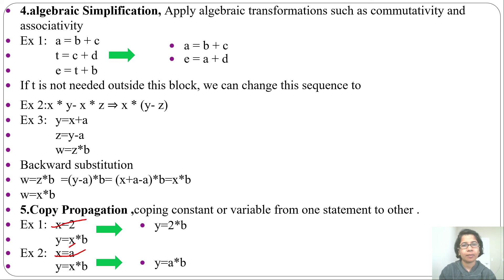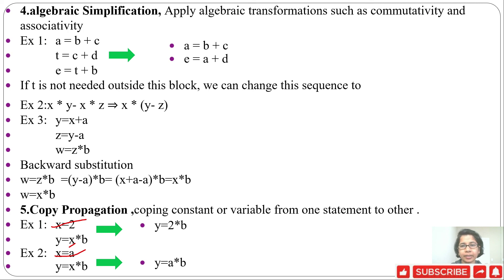This is all about algebraic optimization. We can simplify using algebraic identities, perform strength reduction, constant folding, algebraic simplification using algebraic laws, and copy propagation. In the next lecture I will discuss how to optimize three-address instructions that contain array accesses. If this lecture was helpful, please like and subscribe. Thank you.